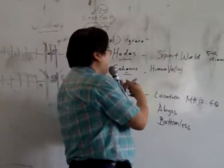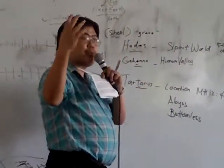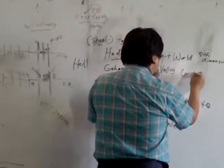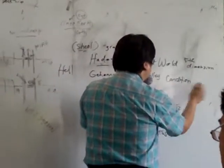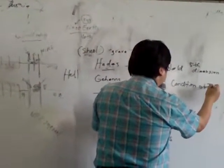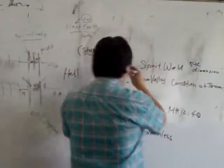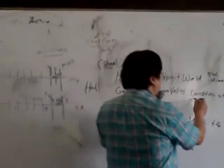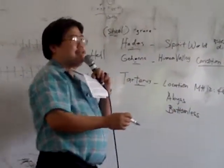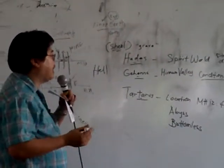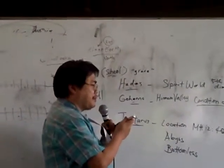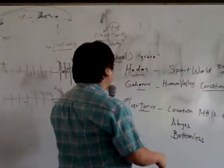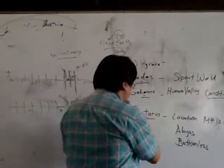Now, Gehenom is what I could distinguish from what Christ would describe. It's a condition of torment. So let's distinguish these three of them. Hades is the dimension, the state of your existence. Gehenna is the condition of torment. The opposite of it, of course, is what Abraham said to Lazarus. Peace. You are now tormented. And Tartarus is the location, the place.